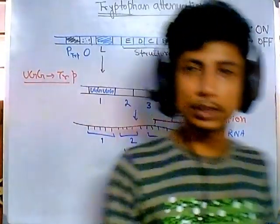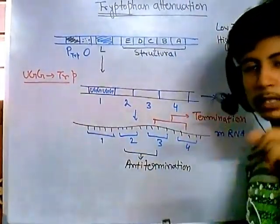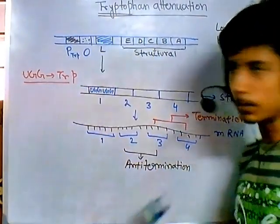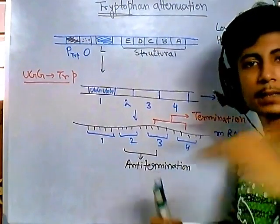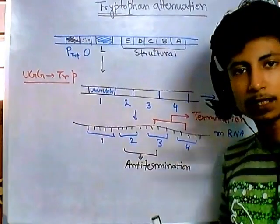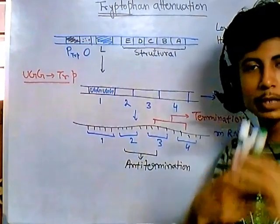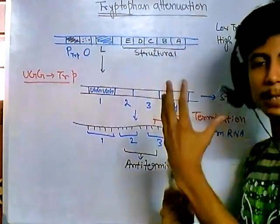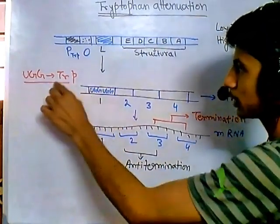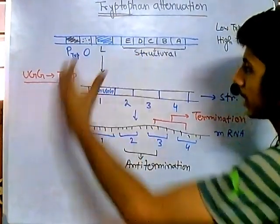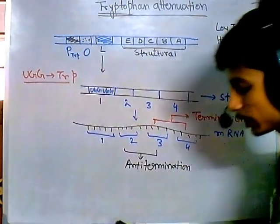In bacterial systems, transcription and translation occur simultaneously. The RNA polymerase moves along the DNA producing mRNA, while a ribosome sits on that mRNA and translates it in parallel. So as mRNA is being produced, proteins are being made at the same time. UGG codes for tryptophan, so when the ribosome encounters UGG, it must incorporate a tryptophan amino acid.